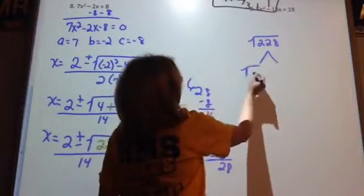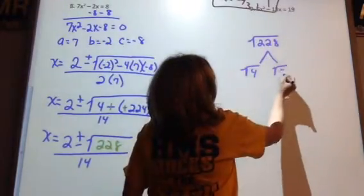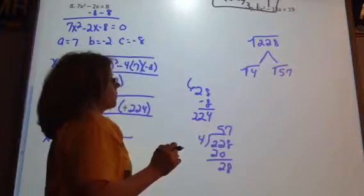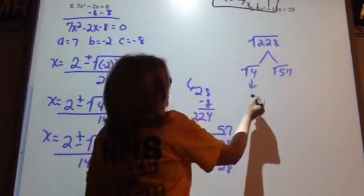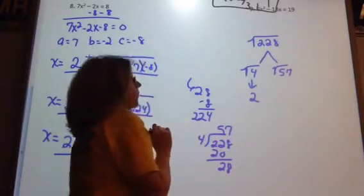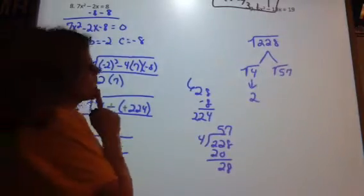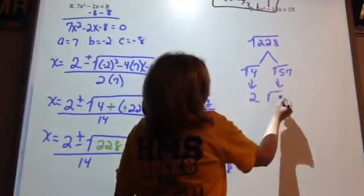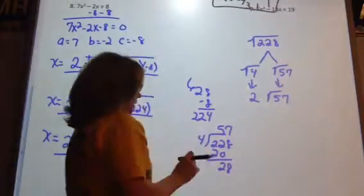Yeah, 4 will. So we can take the square root of 4 and the square root of 57. 4 is a perfect square, so we can bring down that 2. And 57, do we have any perfect squares of 57? We do not. All right. So bring down your radical 57.